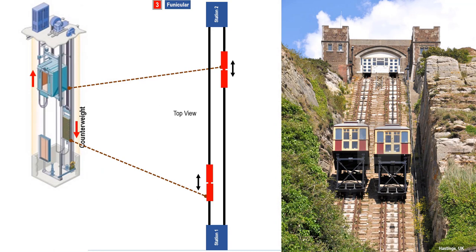The movement and mechanisms of a funicular are also like an elevator. The elevator cabin and the counterweight are the equivalent of two train sets in a funicular. The movement of the cabin and counterweight is in a vertical back-and-forth motion. In a funicular, it is always along a slope in the same back-and-forth motion. The major difference between an elevator and a funicular is the number of passenger stops.